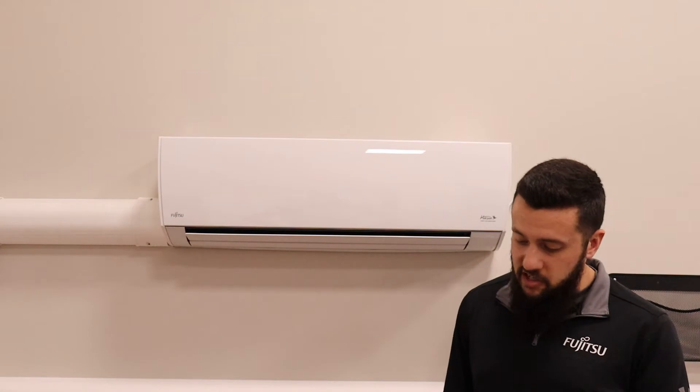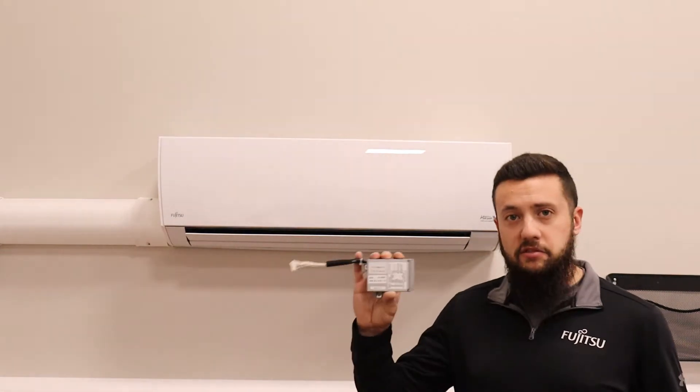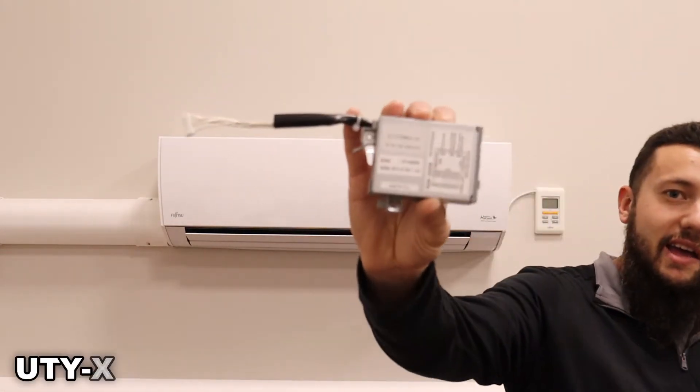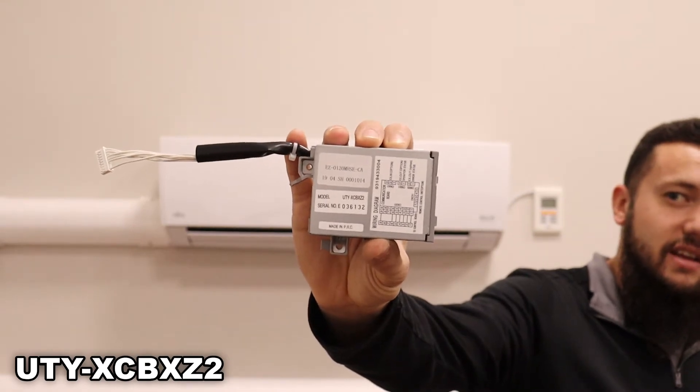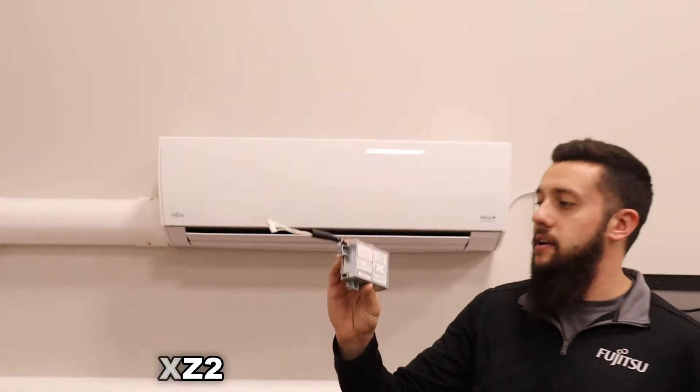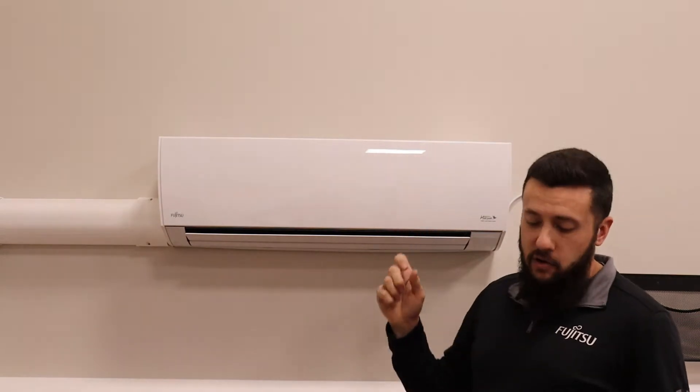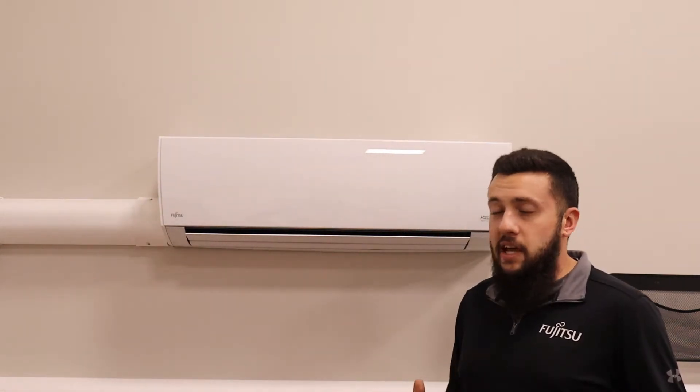So first I'm going to start with one of the most popular accessories, which is the UTY XCB XZ2 interface kit. You're going to need to add this part to your head in order to connect a thermostat, a Wi-Fi module, or potentially an end switch for integrated controls, rebates, or something like that if you're going to do something externally with the unit.